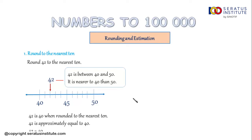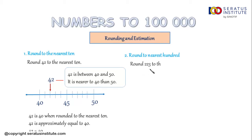Now we go to the second main point: round to the nearest 100. Now let's round 223 to the nearest 100.